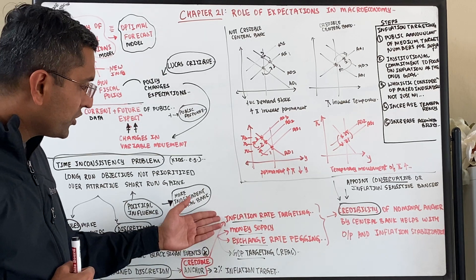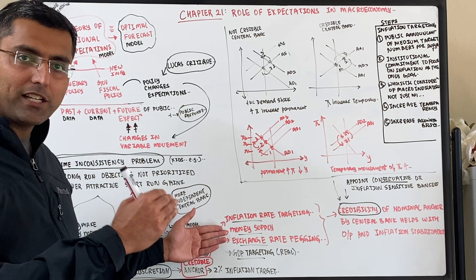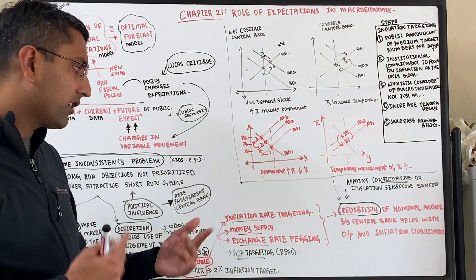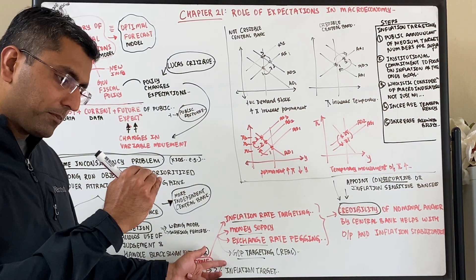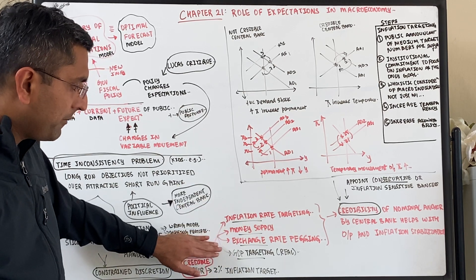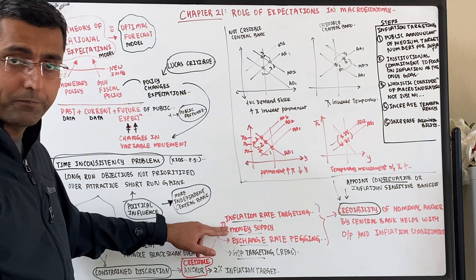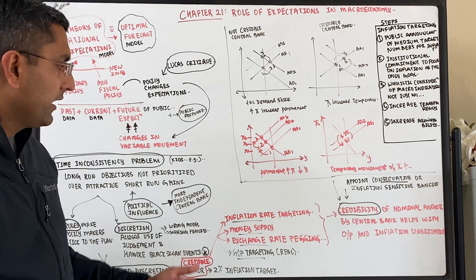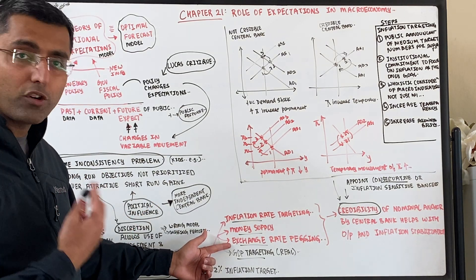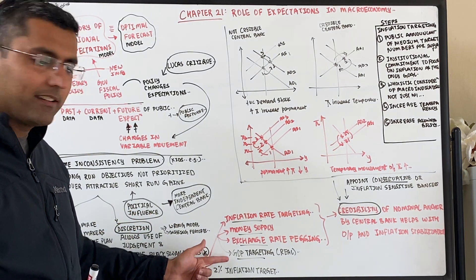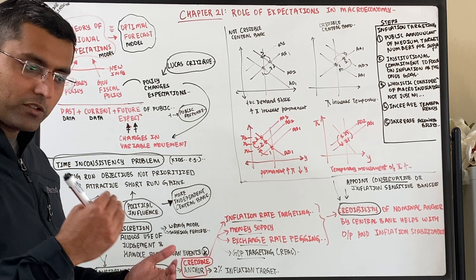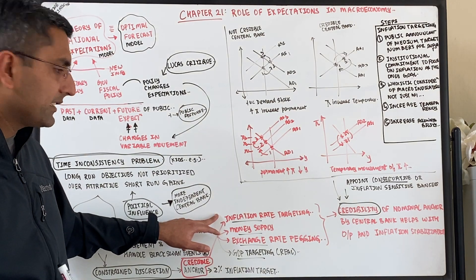Which anchor should you choose? Options include: targeting inflation, constantly increasing money supply by a fixed percentage, pegging the exchange rate to a stable currency like the dollar, or targeting real GDP growth. However, each has pluses and minuses. Constantly increasing money supply when there's no need could cause higher inflation. Exchange rate pegging makes you dependent on the parent country's stability. GDP targeting is difficult to explain since you're simultaneously targeting inflation and employment. Inflation rate targeting is the simplest, which is why many countries adopt it.